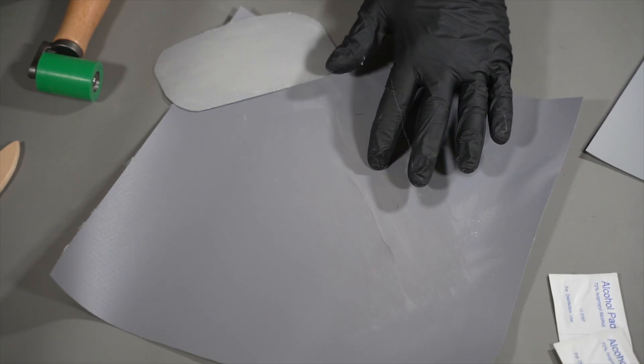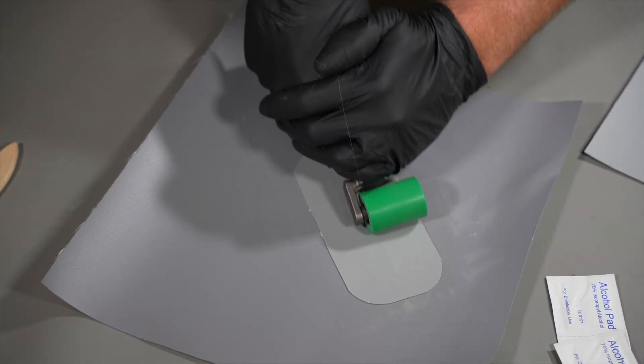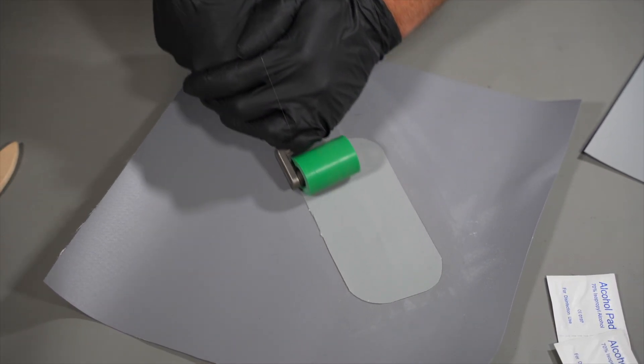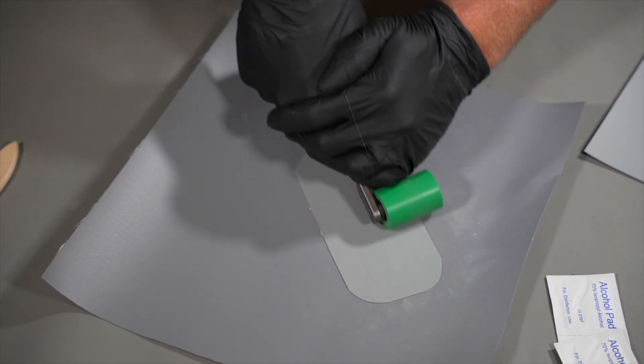Once the glue is tacky, use a rolling motion to apply the patch to the damaged bladder surface. Use a roller or rounded edge putty knife to put pressure on the entire patch and be sure you clear out any air bubbles that may have gotten trapped underneath.